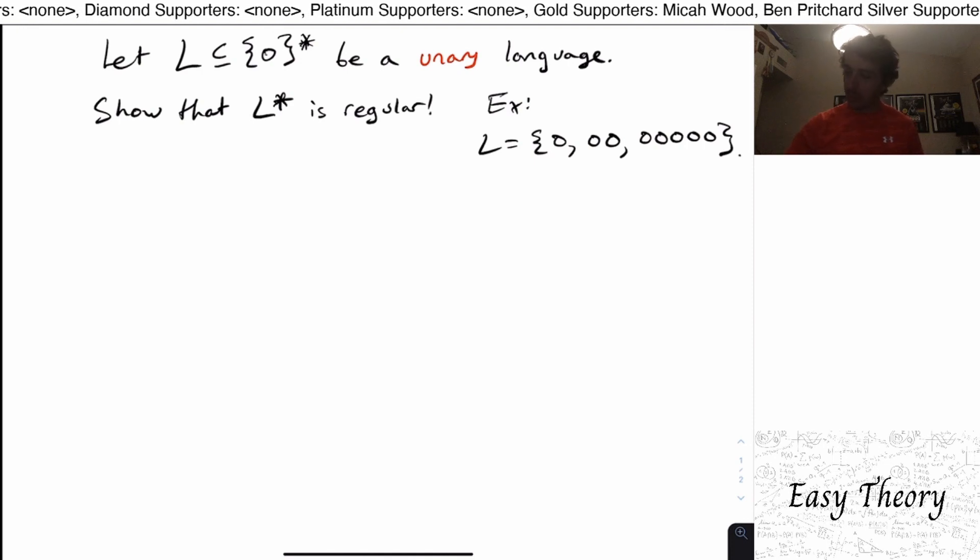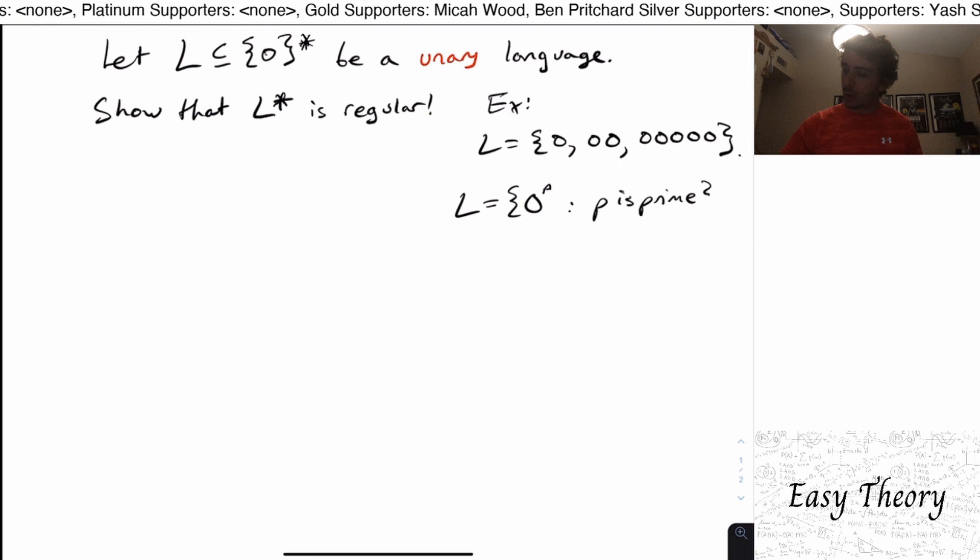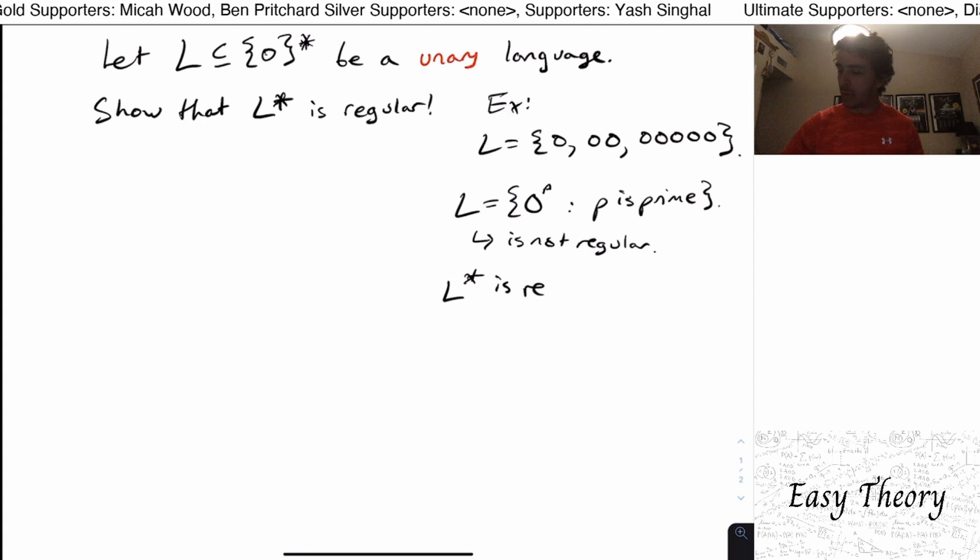So let's actually think about that. Suppose that L is for example zero to the p where p is prime. One could actually show and we probably will do this in a future video that L is not regular. But this result says that L star is regular.